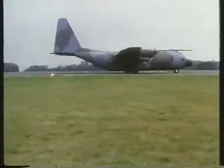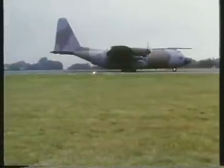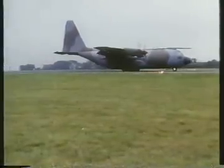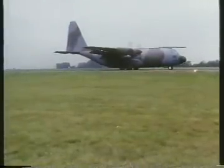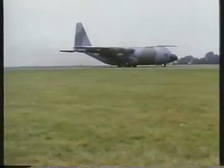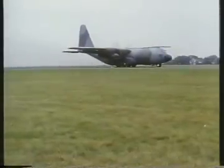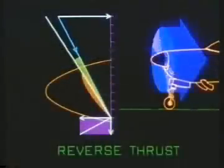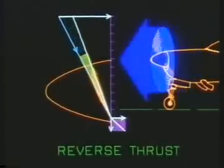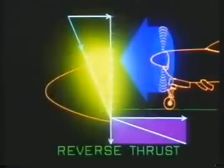Reverse thrust, a further development in pitch control, not only brought dramatic improvements in braking, it also enabled aircraft to be reversed using their own power, and made maneuvering on the ground far easier. Reverse thrust is produced by turning the blades past the flight fine pitch limit to create a relatively large negative angle of attack.